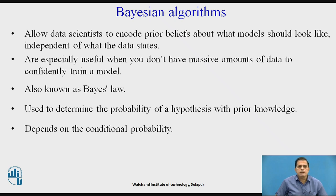These algorithms are especially useful when you don't have a massive amount of data to confidently train a model, meaning this model requires a smaller amount of data to build an accurate model. When we use a massive amount of data, complexity increases. In this algorithm, we use a small amount of data to build a confident model that gives accurate solutions. It is also known as Bayes' law, because Bayes' theorem is totally based on Bayes' law.